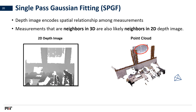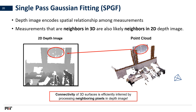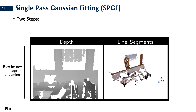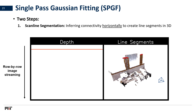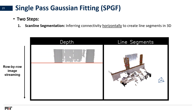However, we can achieve single-pass processing by directly operating on the depth image, which encodes the spatial relationships of our 3D measurements. Interestingly, we notice that measurements that are neighbors in 3D are also neighboring pixels in the 2D image as well. Thus, our algorithm is able to directly infer the connectivity of the surfaces from the depth image in a single pass. Specifically, our algorithm processes images row by row in a raster scan order as illustrated by the arrows — this order is chosen specifically based on how data is transmitted from the actual camera. In our algorithm called single-path Gaussian fitting, or SPGF, we alternate between two steps to infer surface connectivity in horizontal and vertical directions.